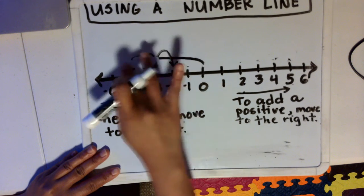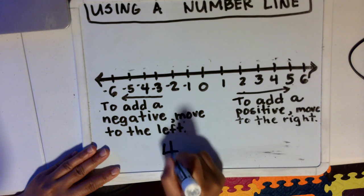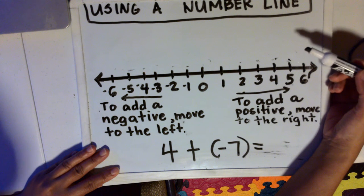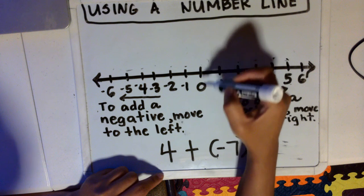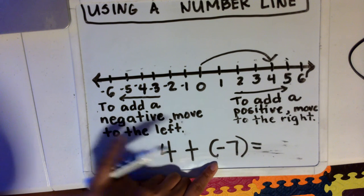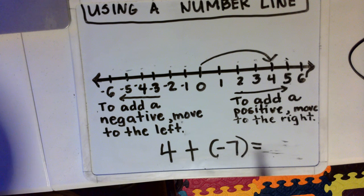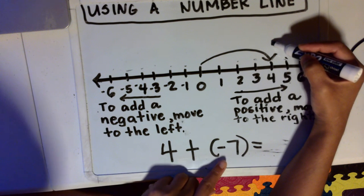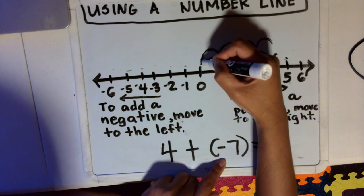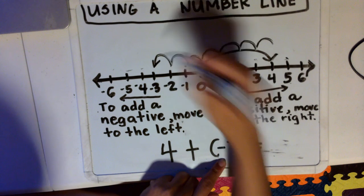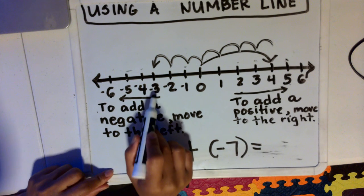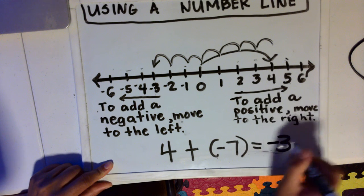What happens if we start with a positive number and we're adding a negative number? Let's say we have four plus negative seven. I'm going to show four on the number line — that's a movement from zero to four. And then I'm going to add a negative seven. Remember, to add a negative, you move to the left of the number line from where you're at. So from four, we move seven steps to the left: 1, 2, 3, 4, 5, 6, 7. We end at negative three. Therefore, the answer is negative three.